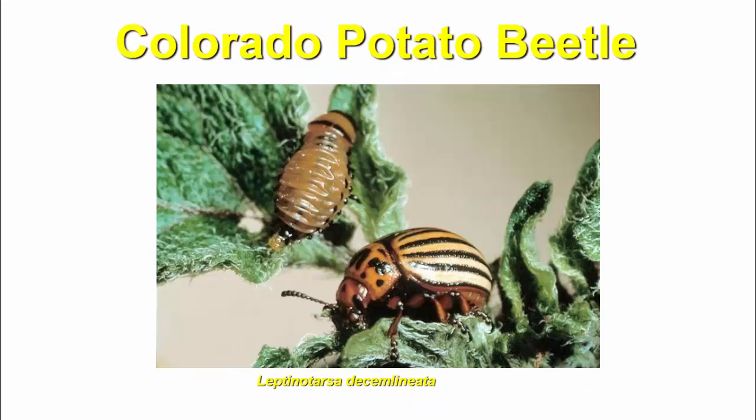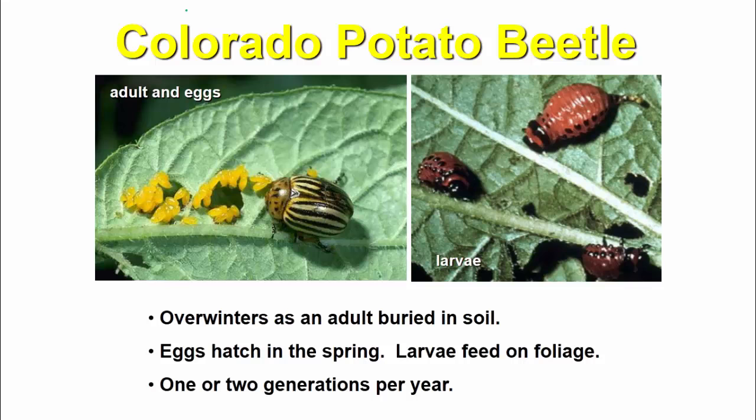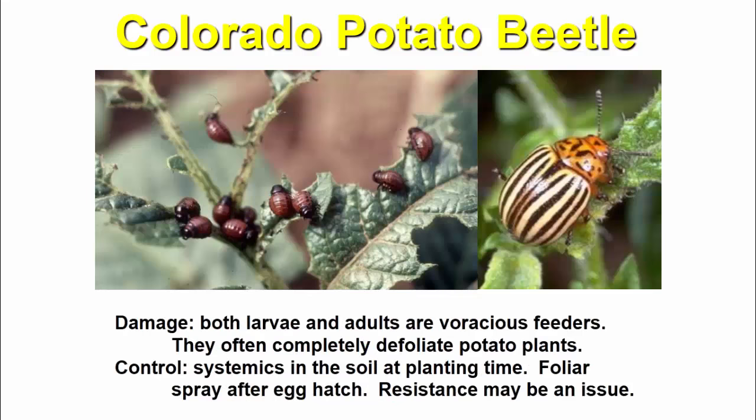Next is the Colorado potato beetle. The adults, eggs, and larvae are shown. They overwinter as adults buried in the soil. In spring, larvae emerge. Both larvae and adults are voracious and often completely defoliate potato plants.